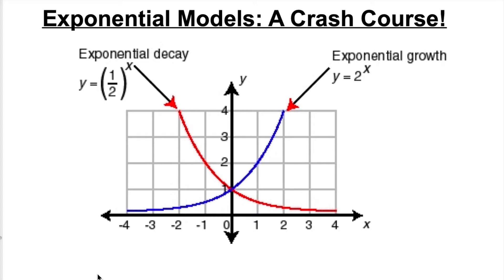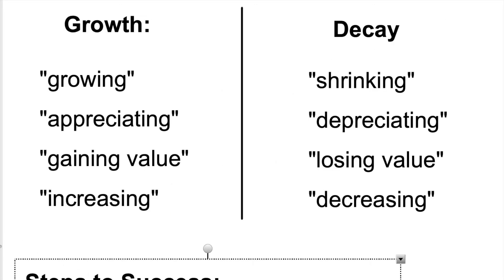So let's jump into it. When we think about growth, we think about the y values growing. Sometimes you'll see the word appreciating, or gaining value, or increasing. They're going to be words telling you that whatever it is we're trying to model, the values of it are going to be going up. And we're going to see some specific examples of that.